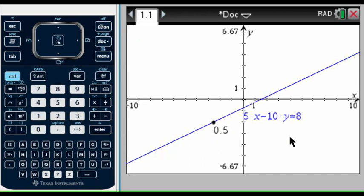So this 0.5, now I know that my line has a slope of one half.